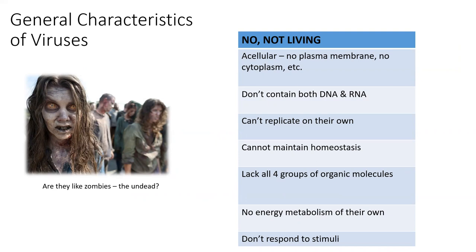Viruses are acellular. Remember that the prefix 'a' means without, so viruses are without cells. That means they do not have the phospholipid bilayer called the plasma membrane. They don't have a cytoplasm, organelles, or flagella. They don't have anything that we've talked about so far, aside from a couple of macromolecules. They do have their own type of genetic material — either DNA or RNA — and they do have some viral proteins. But all the other structures that we've talked about, they do not have.